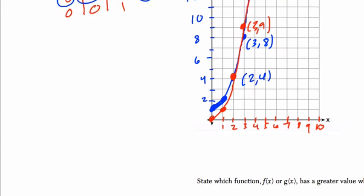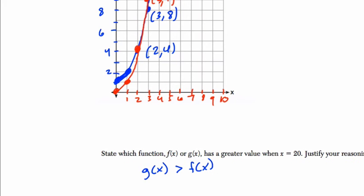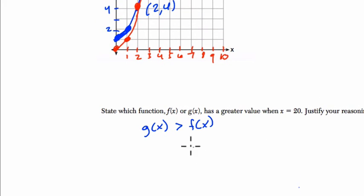So, we can say that down here. I'll say it this way. g of x has a greater value than f of x when x equals 20. Even before I get to it, I know at 5, g of x already has a higher value, but I can plug it in.